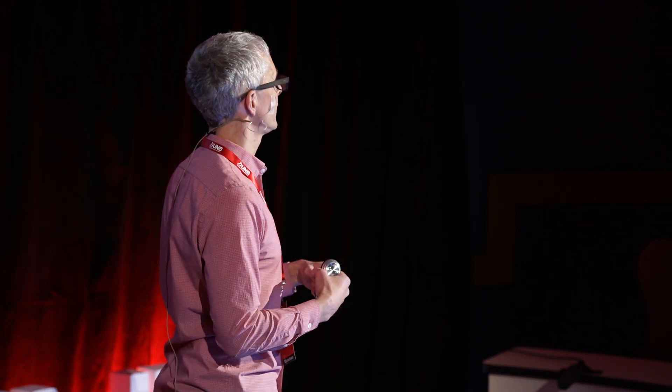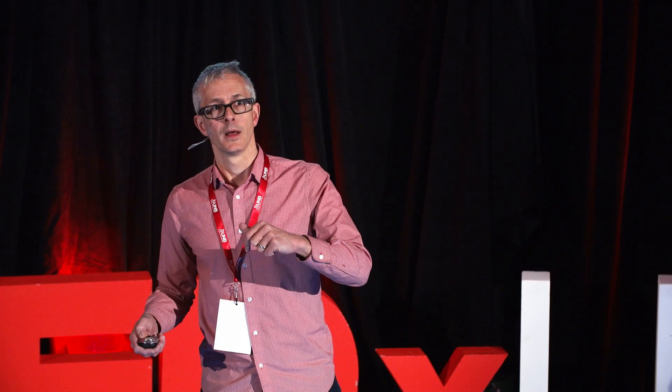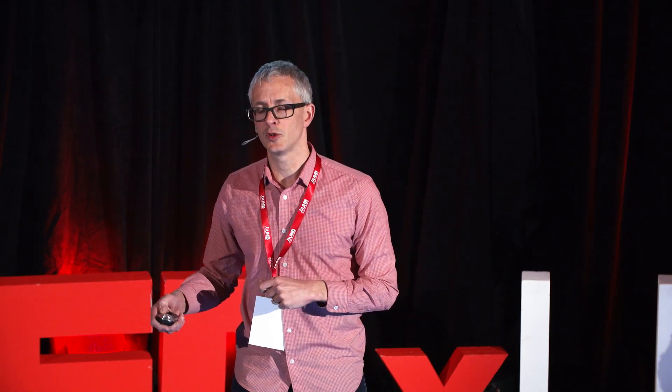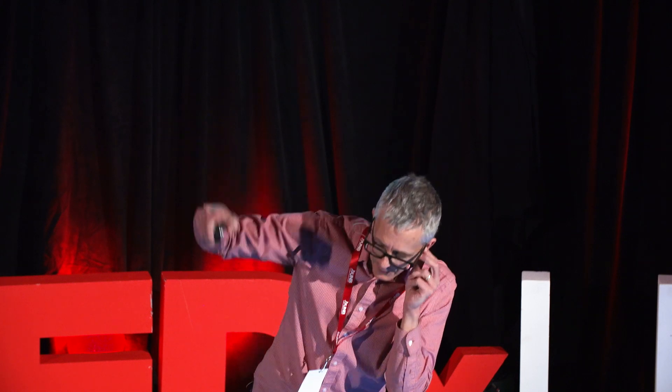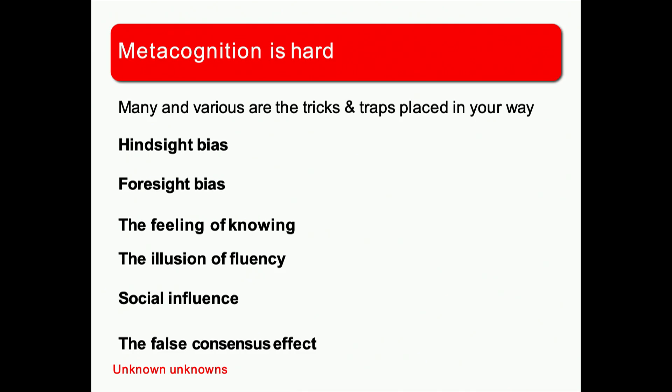Being aware of your learning — understanding what your understanding is — is called metacognition, and it turns out to be extremely difficult. The human brain is wired to give you a misleading impression of what you know. The human brain actually likes you to believe that you understand more than you actually do.